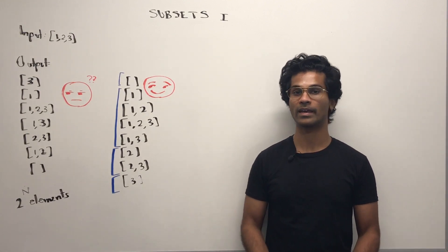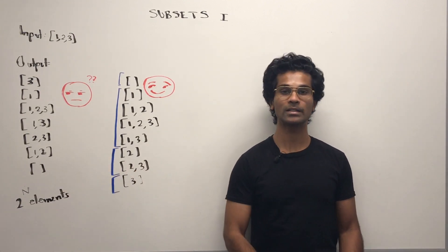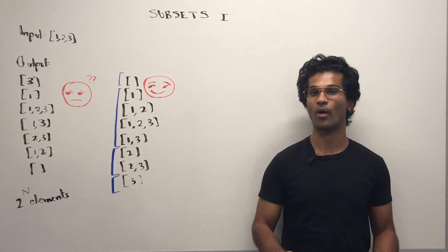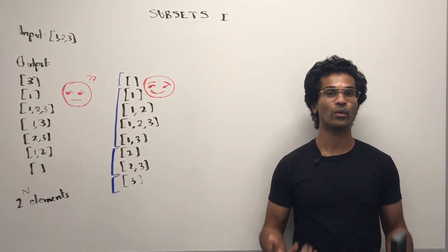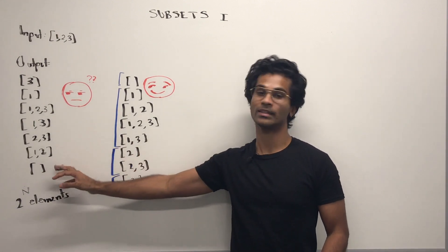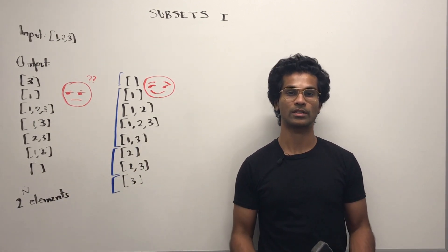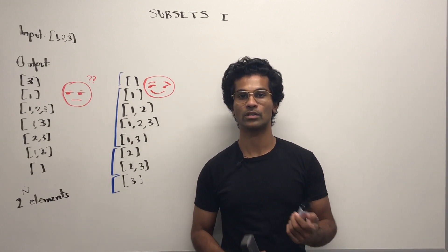So this is the output that they gave us, but it's kind of confusing to know how we go from this to this. Luckily we don't have to give it in the order that they gave us. We can generate our own power set. So how are we going to do that?